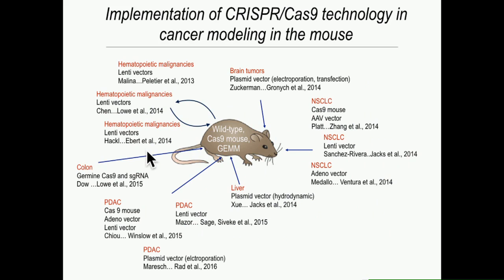We are not the only ones using this technology in this setting. There are quite a few published and unpublished studies looking at CRISPR-Cas9 for in vivo modification in mouse models. For many other tissues — perhaps all tissues you can think of — this technology exists. Where you can deliver the CRISPR components, you can get inactivation and in some instances activation as well.